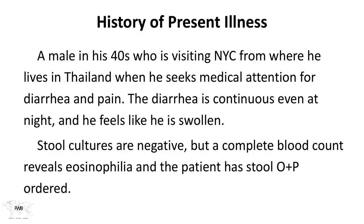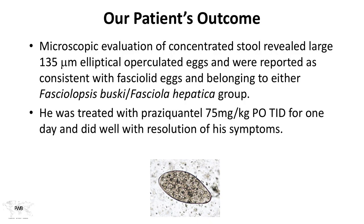Dr. Daniel Griffin is going to give a clinical vignette illustrating the pathogenesis of this infection. A male in his 40s visiting New York City from Thailand seeks medical attention because he has developed diarrhea and pain. The diarrhea is continuous even at night, and he feels swollen. Stool cultures are negative, but a complete blood count reveals eosinophilia, and the patient has a stool ova and parasites ordered. On the stool ova and parasites, large 135-micron elliptical operculated eggs are seen, reported as consistent with fasciolid eggs — belonging either to Fasciolopsis buski or Fasciola hepatica. The patient was treated with praziquantel and did well; symptoms resolved.